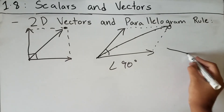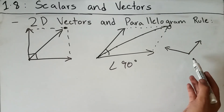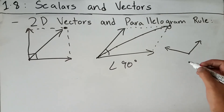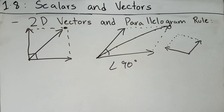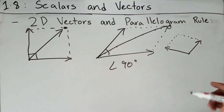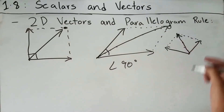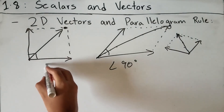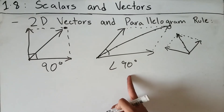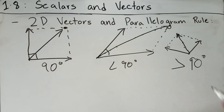Similarly, if vectors point in directions forming an obtuse angle — greater than 90 degrees — we again draw the parallelogram and the resultant vector passes through to the far corner. So we've covered right angle, acute angle, and obtuse angle cases. Now let's apply the parallelogram rule to a real-life scenario.